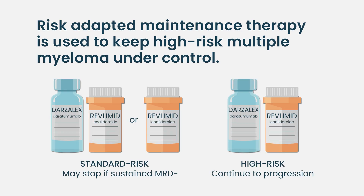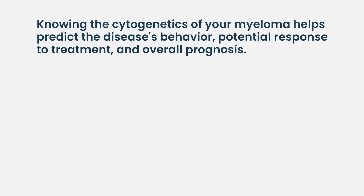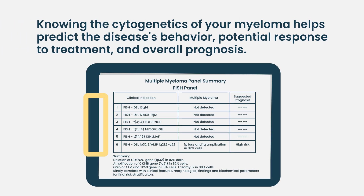Even though induction and transplant portions of treatment tend to be the same regardless of cytogenetics, it is important to know whether you're high risk or standard risk so that a proper maintenance plan can be established. High-risk cytogenetics at diagnosis helps us understand not just the type of disease, but whether it's going to be hard to fight, whether it's going to relapse more quickly — requiring more frequent surveillance — or whether it's more likely to stay in remission for a longer time.